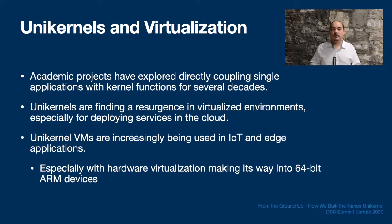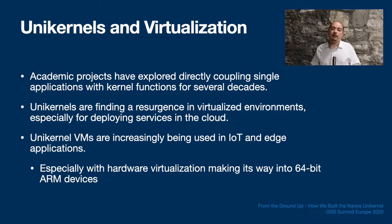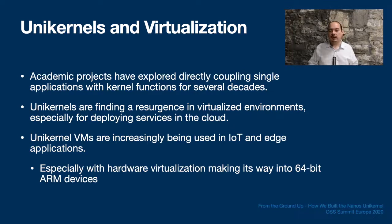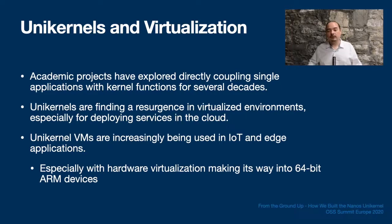Unikernels are nascent technology. While some academic projects from the late 90s started to experiment with merging kernel and application functions directly with a single application, unikernels have only recently found a home in virtualized environments in the cloud, where microservices are deployed and mainstream OS features like multiple running processes and multiple user support can be jettisoned without consequence. Unikernels are increasingly being used to isolate services in edge and embedded applications as well, spurred by the emergence of hardware virtualization features on system-on-chips such as those based on AArch64. For the purposes of this talk, we'll focus on what has been the primary target for Nanos: services in the cloud.